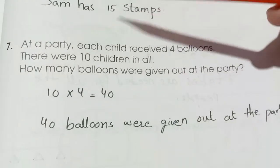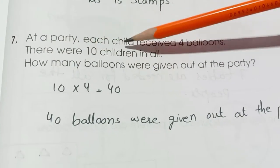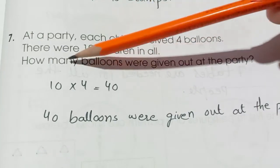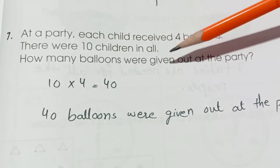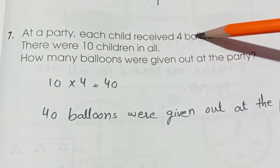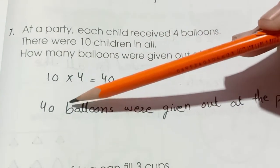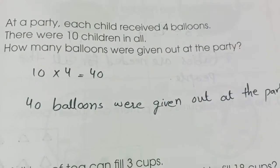Question number 7. At a party, each child received 4 balloons. There were 10 children in all. How many balloons were given out at the party? So we have 10 children and we give 4 balloons to each. 10 fours are 40. 40 balloons were given out at the party.